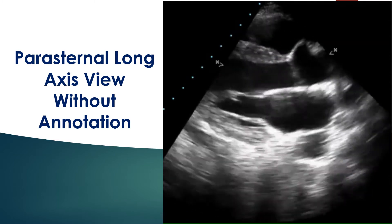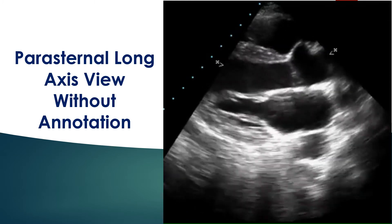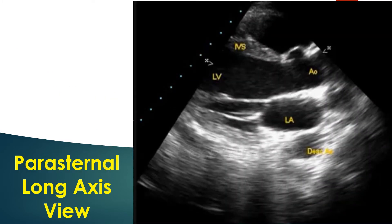In the parasternal long axis view without annotation, a cross section of the descending aorta is seen posterior to the left atrium. The coronary sinus can be imaged if it is dilated and will be visible in the atrioventricular groove. A dilated coronary sinus would suggest a persistent left superior vena cava draining into the coronary sinus.